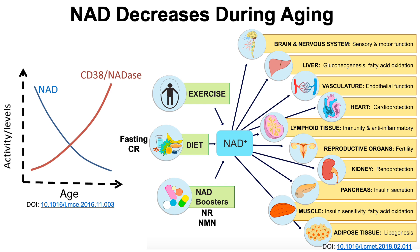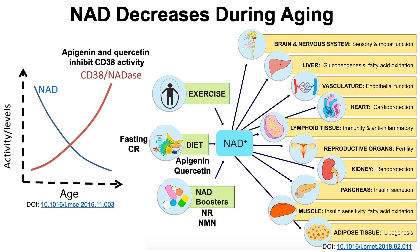In terms of diet, fasting and calorie restriction also increase NAD levels. But that doesn't really say what components within the diet can boost NAD levels. Two components — apigenin and quercetin — have been shown to inhibit CD38 activity. CD38 is a NAD-ase, meaning it is a protein that degrades NAD. CD38 levels increase during age, which is one explanation for why NAD levels decrease during aging.